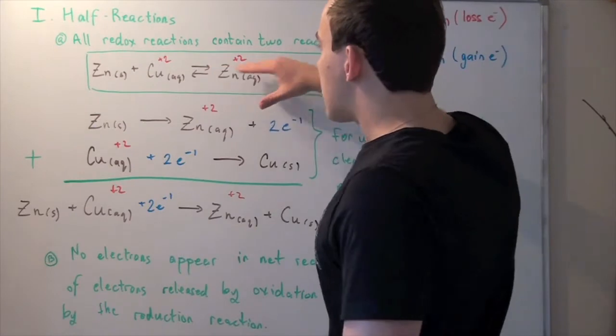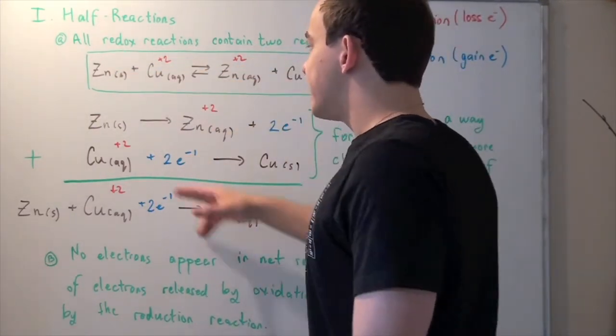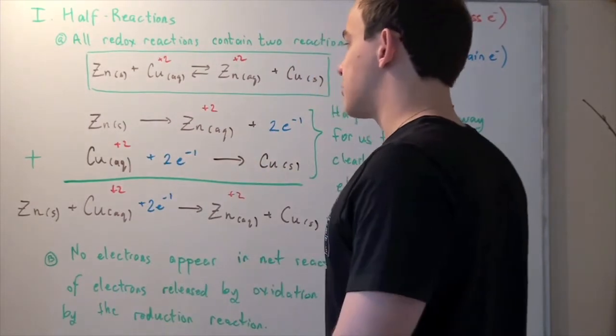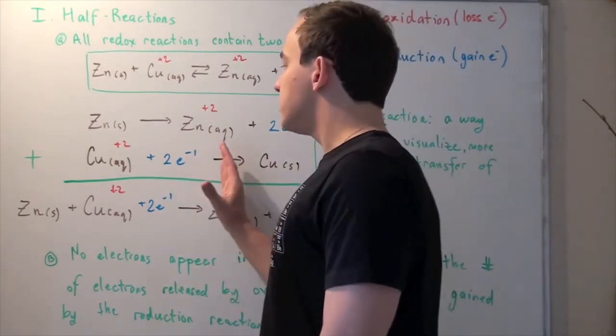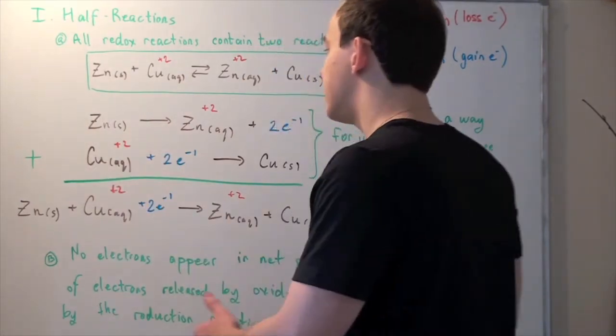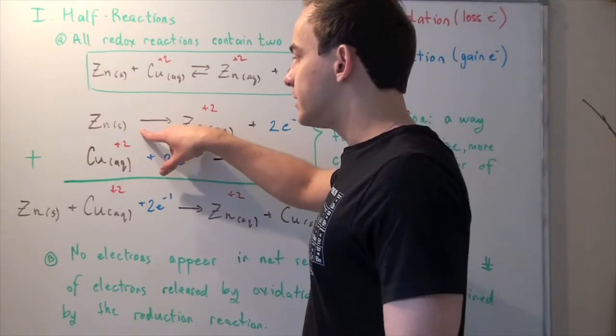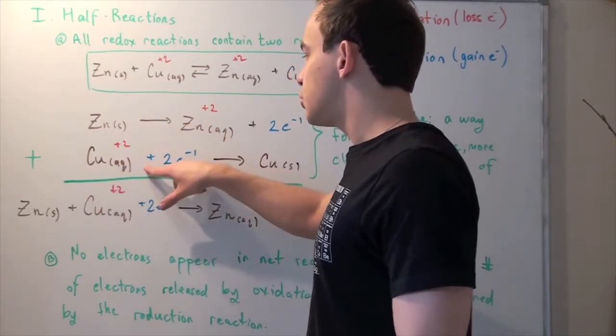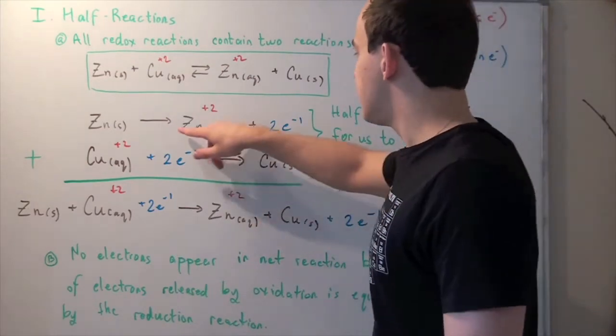Now to go back to our net redox reaction, what we simply do is we add up the two half-reactions. So we add up the two half-reactions by first adding up all the molecules on this side and then add up all the molecules on this side. So zinc solid plus aqueous Cu²⁺ plus two electrons gives us this, produces everything on this side.